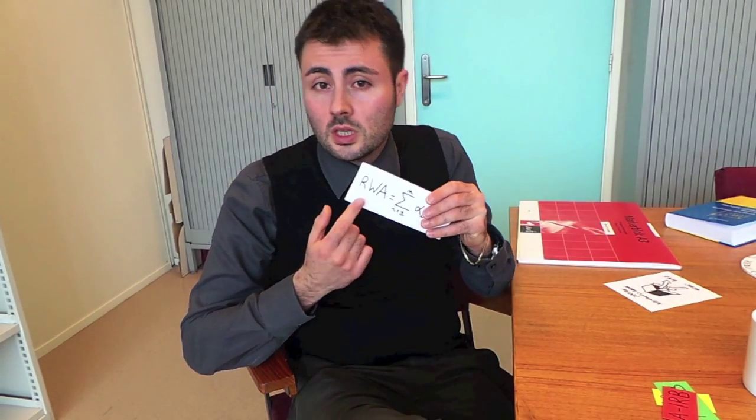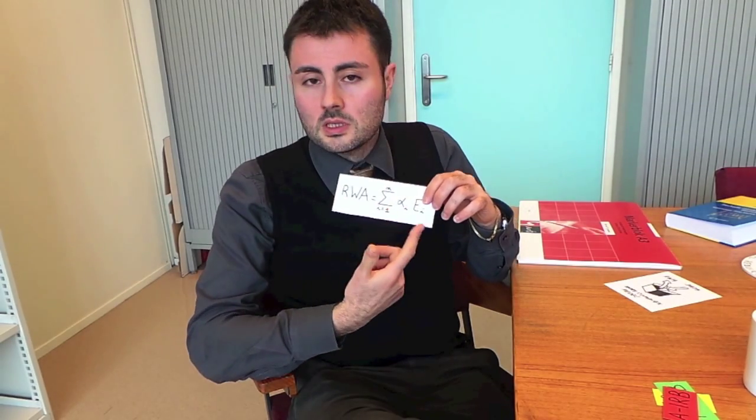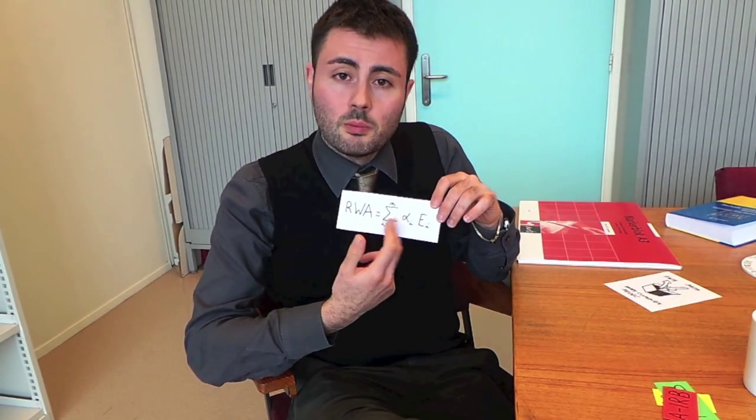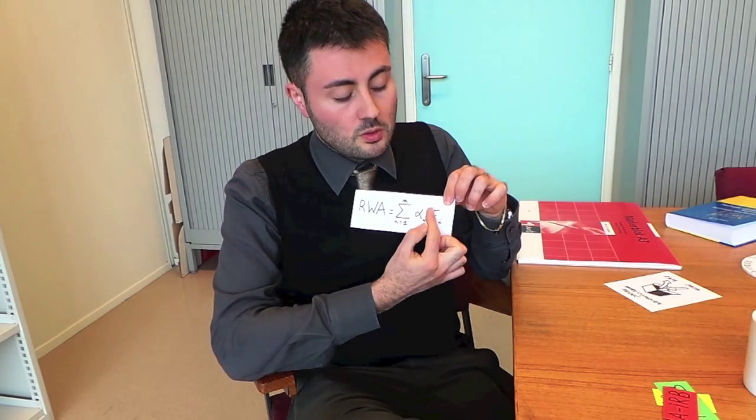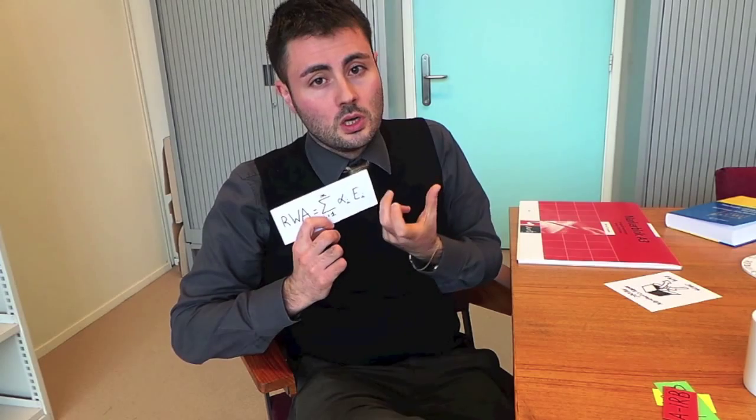The standardized approach is the simplest approach we can use in the Basel framework, and essentially it relies on the computation of a quantity which is called risk weighted assets. This involves essentially the summation of very simple quantities — essentially the principal amounts by some risk weights. The formula we have seen together also includes a second part: the summation in J, that is to say the part relative to the credit equivalent amount.